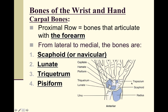Starting with the proximal row of carpals: the first bone is the scaphoid, shaped somewhat like a peanut. It is a commonly fractured bone because of its location — there is a small gap, and during certain injuries such as falling, the radius can push into it and cause a fracture.